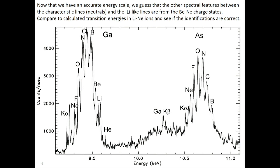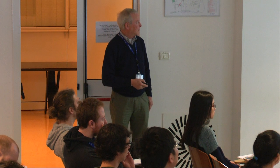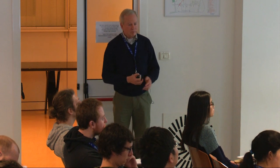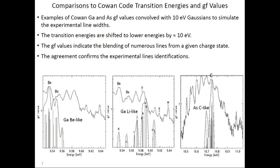To go further, we have to simulate a spectrum using a code because we think we know what the charge states are. Then we can check whether these line identifications are correct. There are many codes: the Cowan code, FlyCheck, Grant, Grasp code, QLAC, BAC, and lots of others. Being an experimentalist, I'm going to look for the easiest to use. The Cowan code and FlyCheck are quite accessible on websites and easy to use — even an experimentalist can use these codes.